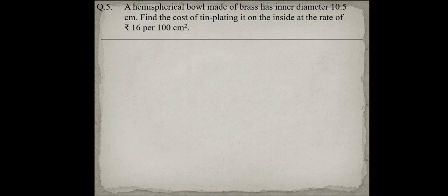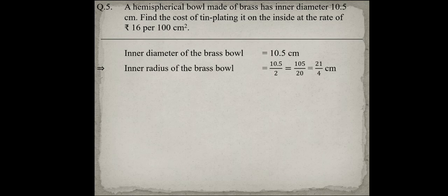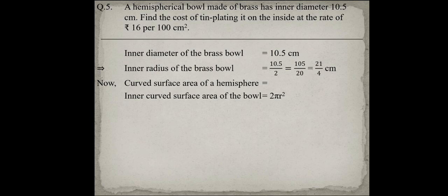In question number 5, a hemispherical bowl made of brass has inner diameter 10.5 cm. Find the cost of tin plating it on the inside at the rate of Rs 16 per 100 cm². The inner diameter is 10.5 cm, so inner radius is 10.5 upon 2 = 21 upon 4 cm. The inner curved surface area of the bowl equals 2πr². Putting in the values, the inner curved surface area equals 693 upon 4 cm².